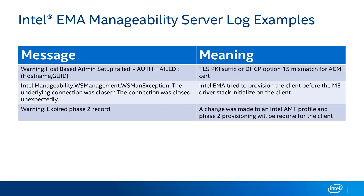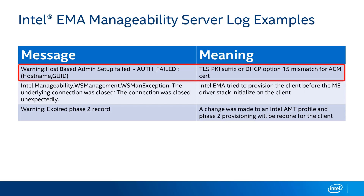Let me give you a few examples of common messages you may encounter in the EMMA Manageability Server log. The first is a warning: 'Host-based admin setup failed with an auth failed message,' along with the hostname and GUID. This typically means that for admin control mode or certificate-based provisioning, the DNS suffix on the PKI provisioning certificate did not match DHCP option 15, or if you set a provisioning certificate DNS suffix in the MEBX, those two didn't match.